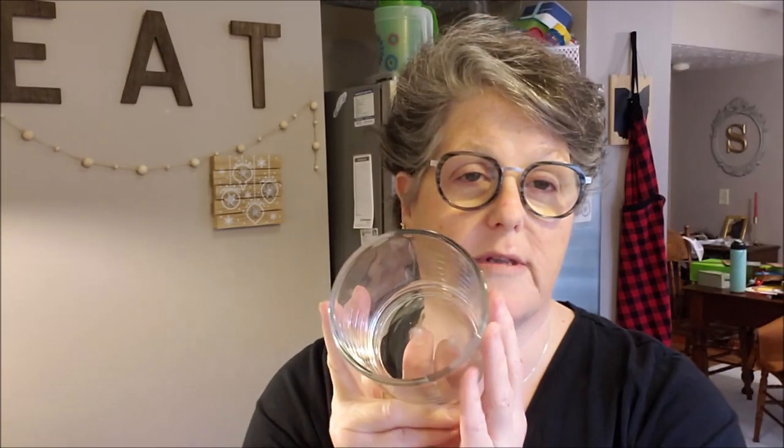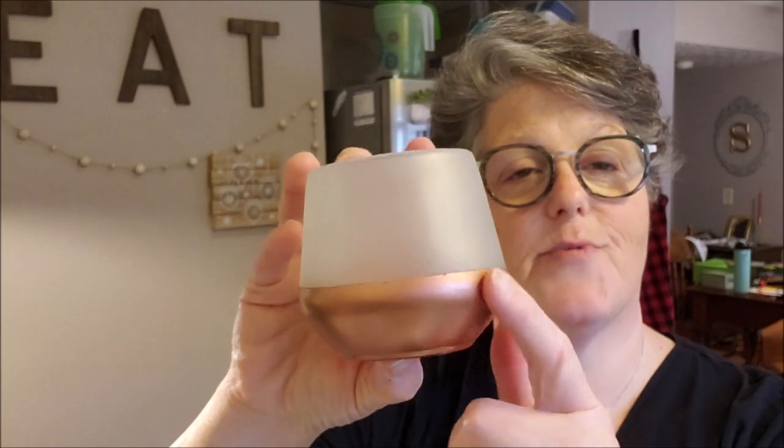All right. So the items that I'm using, I have some vessels. Now this is actually an old candle. It's not quite as big as a Bath and Body, but it is a larger three wick candle. I just cleared out the wax and we're going to reuse that. From the Dollar Tree, I grabbed this votive and I just spray painted a little copper to go on the bottom. But this was just from the Dollar Tree.